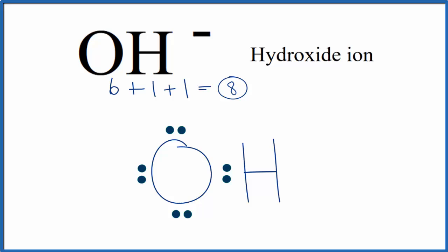Because it's an ion, let's put brackets around it, and then we put that negative charge right outside the brackets. So this is the Lewis structure for OH minus, the hydroxide ion.